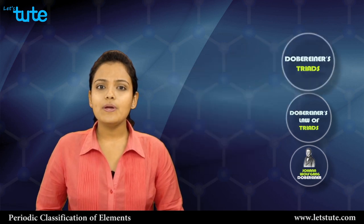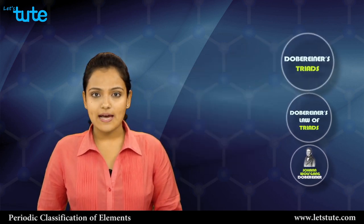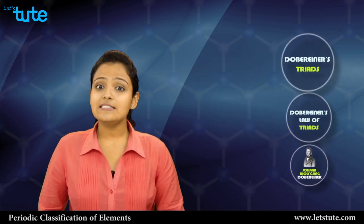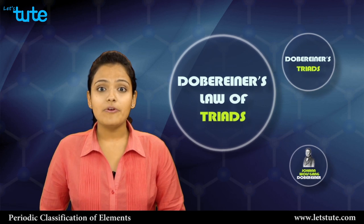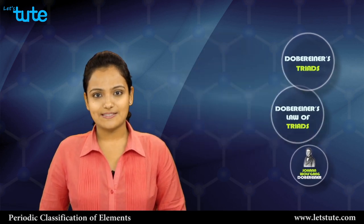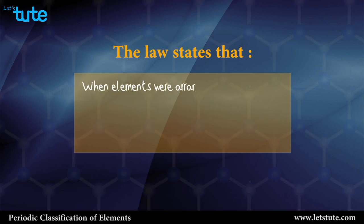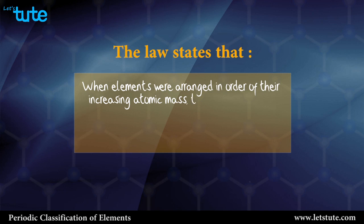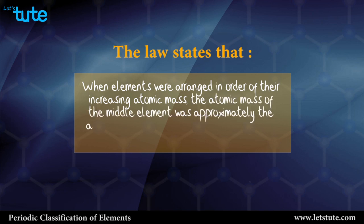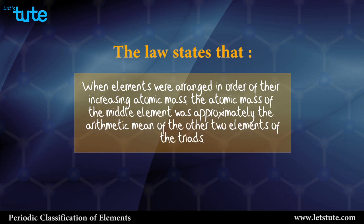Now that we know what Dobereiner's Triads are, let us go ahead and study Dobereiner's law of triads. The law states that when elements were arranged in order of their increasing atomic mass, the atomic mass of the middle element was approximately the arithmetic mean of the other two elements of the triad.